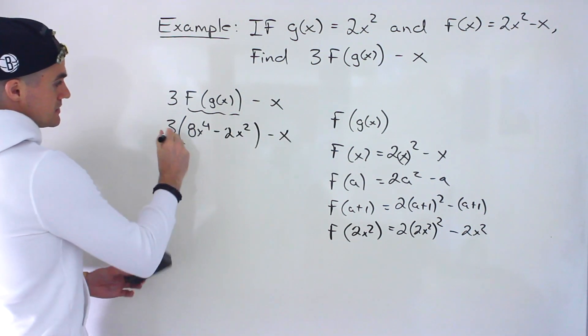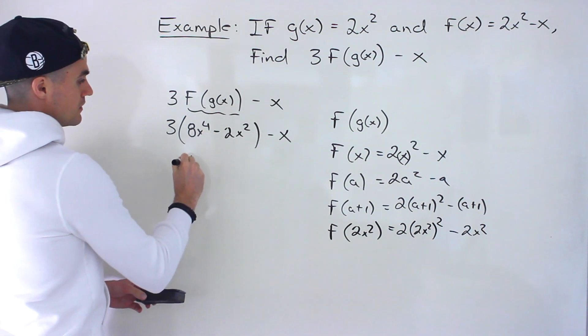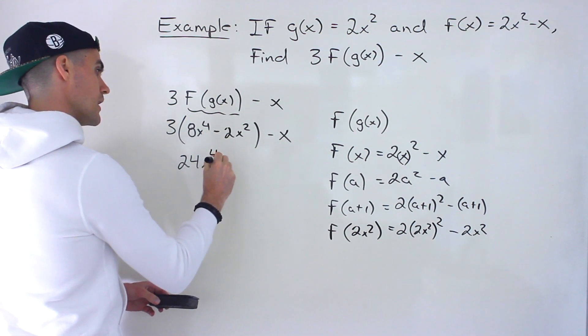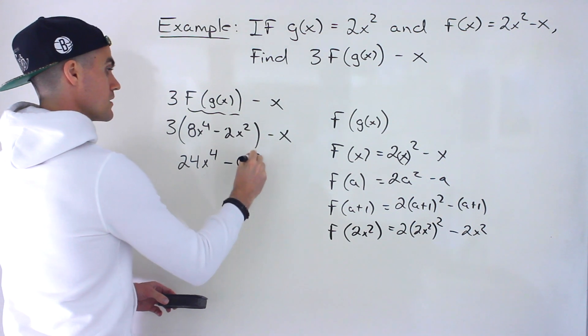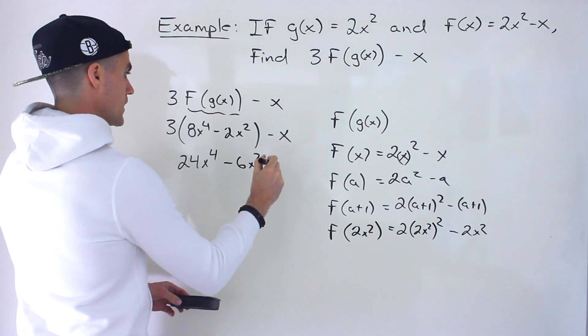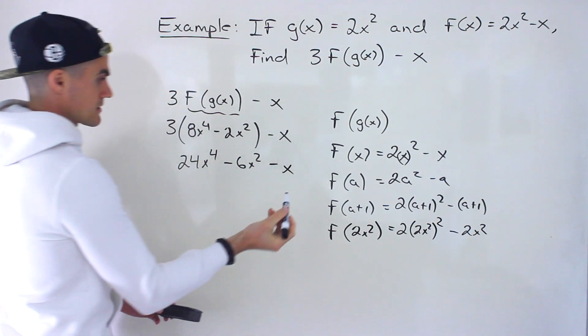And then we take the 3, distribute it, minus 6x squared, minus x.